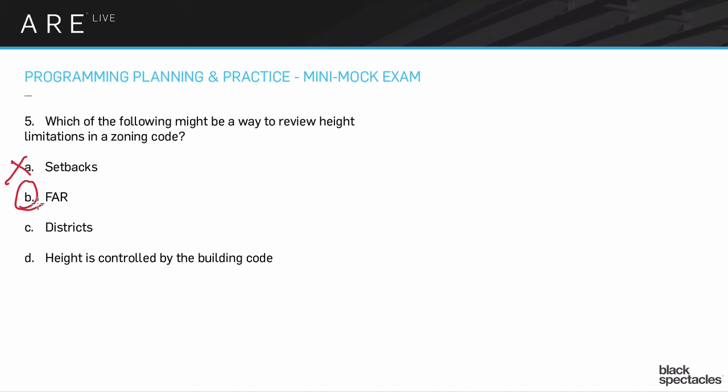So the point of the FAR is to control kind of mass, which is one of the ways to control height. So if you have an FAR, let's say the 10,000 square feet site, and we have an FAR that is, say, two, that means I can build a 20,000 square foot building.